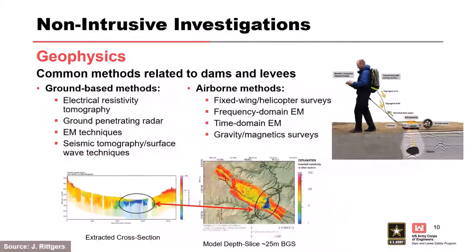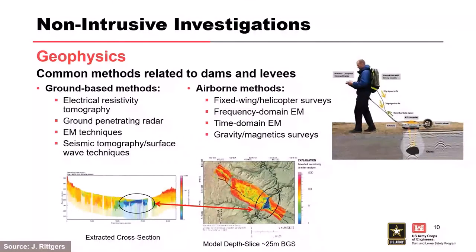Common methods relating to dams and levees: for ground-based methods, familiarize yourself with electrical resistivity and ground-penetrating radar. GPR might be great for your upper 20 meters and identifying buried metal objects, but it has limitations. EM techniques are useful for near-surface discontinuities. Seismic refraction or seismic tomography — when a geophysicist talks about seismic lines they ran, they're talking about seismic refraction, not seismic reflection. Seismic reflection is an extremely deep method, not applicable at a dam site. For airborne methods especially for levees or large project areas: helicopter surveys, different types of electromagnetic surveys, gravity and magnetic surveys. Magnetic can be great in a karst environment to identify solution features.